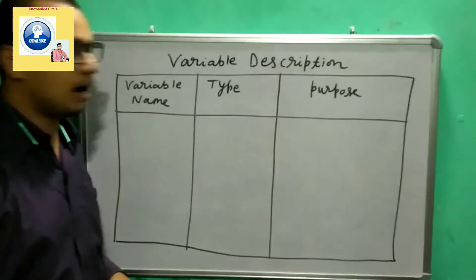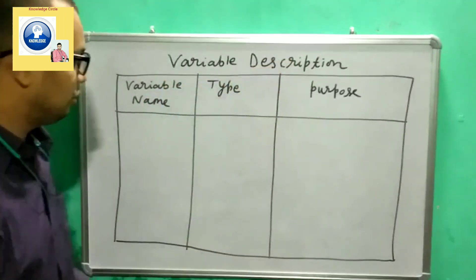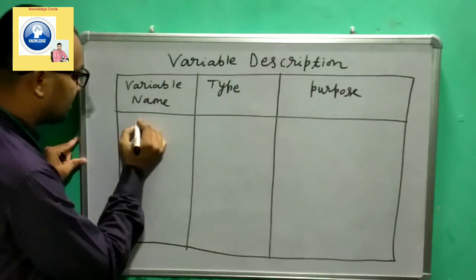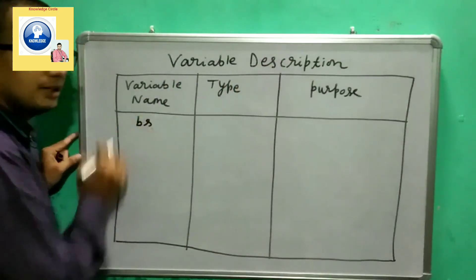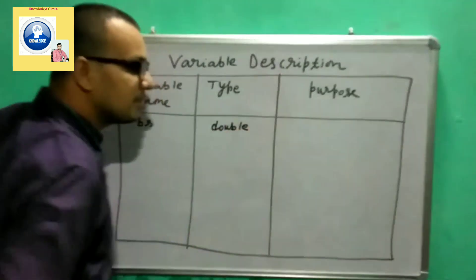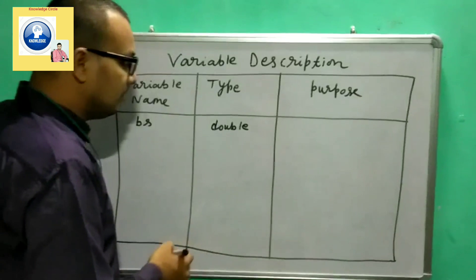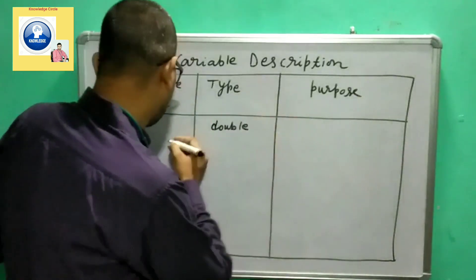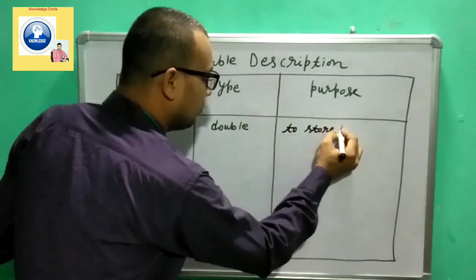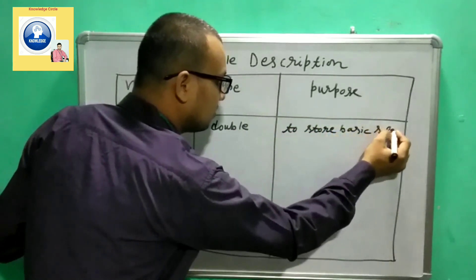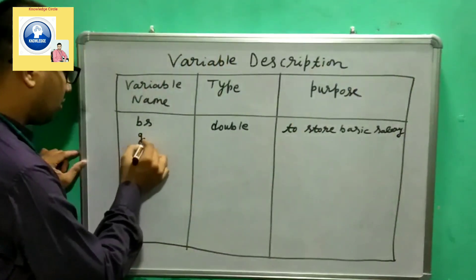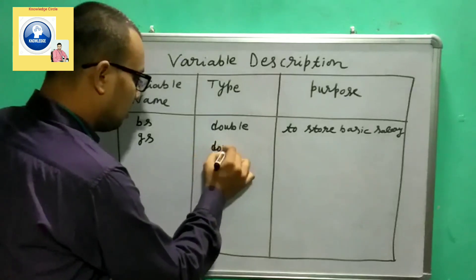For writing the program, we will first look at the variable description — what variables we require. For basic salary, I'm taking a variable 'bs' of type double, because the salary may be a decimal value. The purpose of 'bs' is to store basic salary. Next, for gross salary I'm taking 'gs', also of type double, to store gross salary.